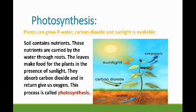There is a process in plants which is called photosynthesis — P-H-O-T-O-S-Y-N-T-H-E-S-I-S. You have to learn its spelling and do written practice as well. Plants can grow when water, carbon dioxide, and sunlight are available. Soil contains nutrients — meaning useful elements in soil. These nutrients are carried by water through the roots. The leaves make food for the plants in the presence of sunlight.